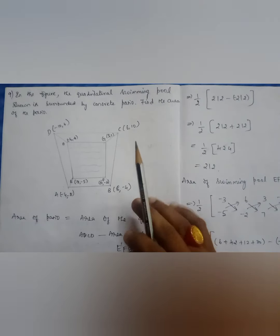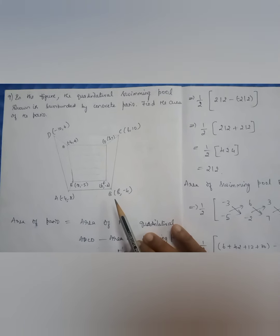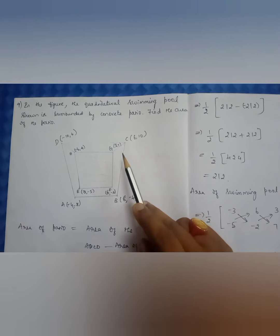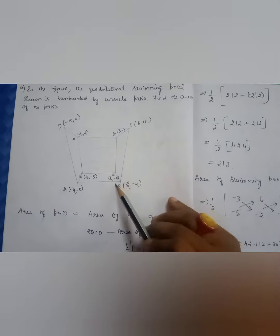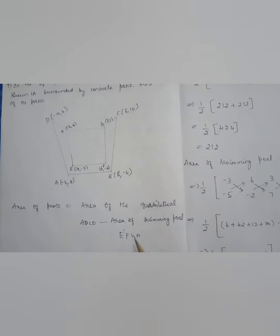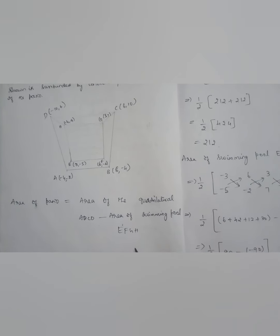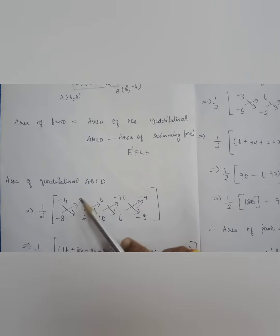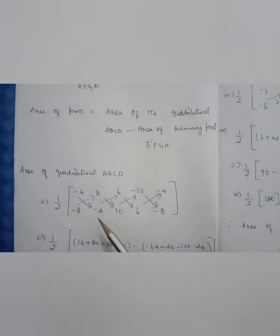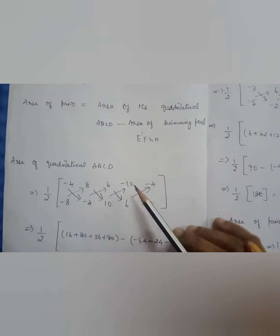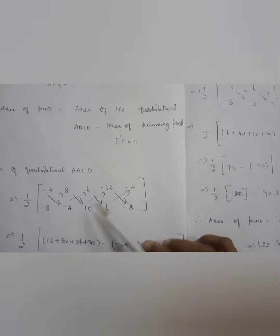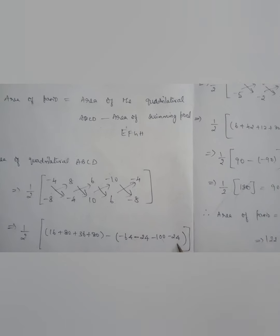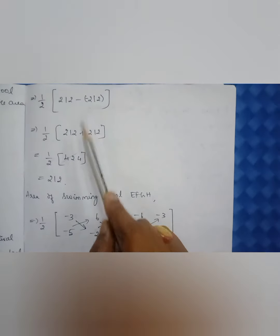The last sum: the quadrilateral is designed as a swimming pool surrounded by a concrete patio. There is an outer quadrilateral and an inner quadrilateral. Area of the patio = area of quadrilateral ABCD − area of swimming pool EFGH. For area of quadrilateral ABCD: half × | ... |. With the given vertices: (−)(−) gives +4×4=16, 18→10=80 (cross terms), 6×6=36, 10×8=80, and the subtracted row: (−)(−)18×8=64, (−)4×6=−24, (−)10×10=−100, (−)6×4=−24. Taking the minus inside gives half × 212 + 212 = half × 424, giving 212 square units.